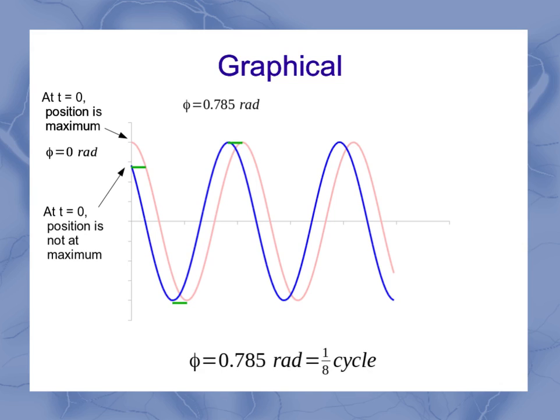Now for this particular phase shift, 0.785 radians, that's actually equal to 1/8 of a cycle. Remember again, one cycle is 2π radians. So what this means is if I were to look at one cycle, say going from the minimum to the minimum, the phase shift is 1/8 of that length. So I've shifted by 1/8 of the total length of a cycle.